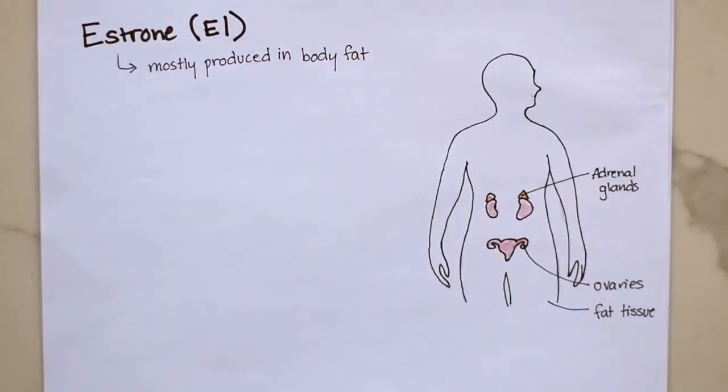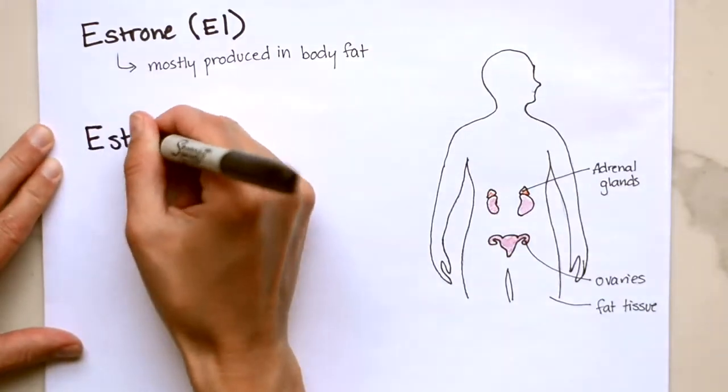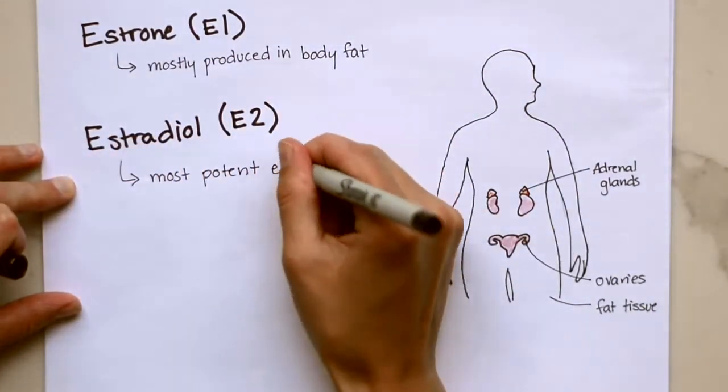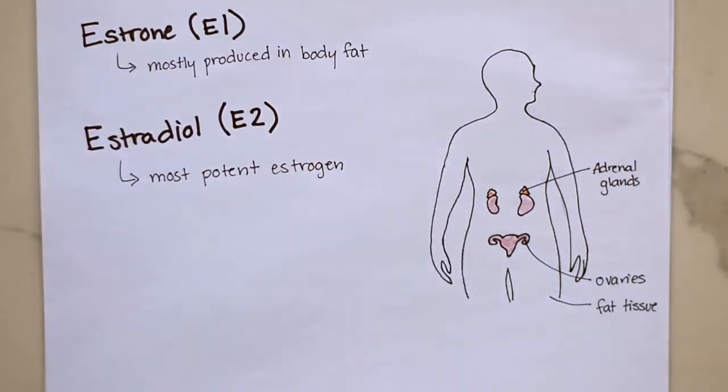Then we have estradiol, E2. This is the most potent and active of the estrogens. It is made in the ovaries and in lesser amounts from DHEA and testosterone. It binds very strongly to estrogen receptors and is the main estrogen involved in the menstrual cycle.